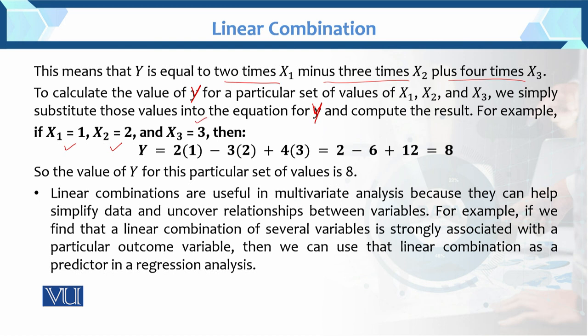What does the linear combination show us? Y is the linear combination, the transformation: 2 of X₁, X₁ is 1. 3 of X₂, because we have X₂ equals to 2. Plus 4 of X₃, 4 multiplied by X₃, we have X₃ equals to 3. So after calculation, after addition and subtraction, the Y variable is 8.